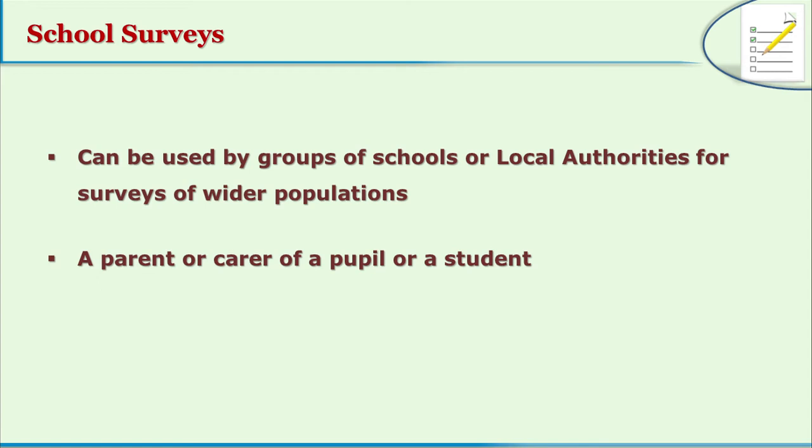School surveys can be conducted individually or by a group, and this person or group can be people who are part of the school or a third party as well. The school survey can be about all learning experiences given to students in the school, or it could be focused on a particular subject or activity — for example, a science club or activities related to the language laboratory. Depending on the focus, the scope of the school survey would differ, but the main focus is always the students and their benefits.